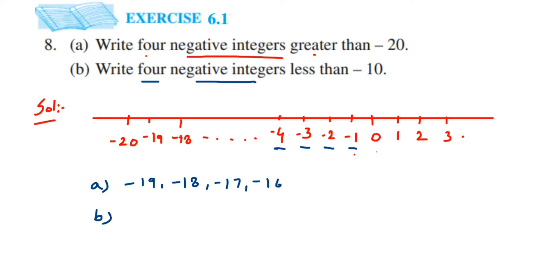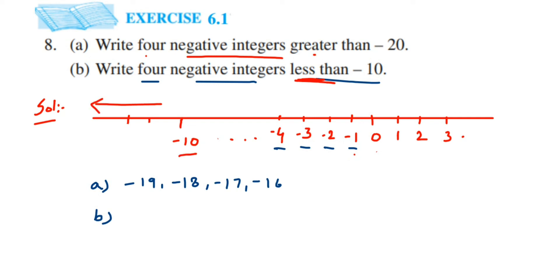For part two, they ask us to write four negative integers less than minus 10. As I mentioned, numbers on the right-hand side are greater, so numbers on the left-hand side will be less. Suppose I have minus 10 here — any number lying on the left-hand side of minus 10 will be less than minus 10, and any number on the right-hand side will be greater. On the left we have many numbers; even minus 100 would be correct because minus 100 is less than minus 10.